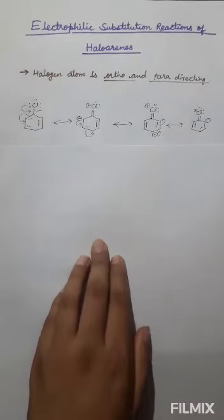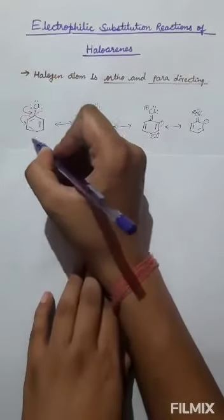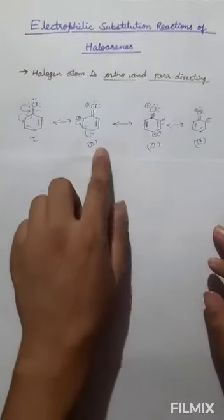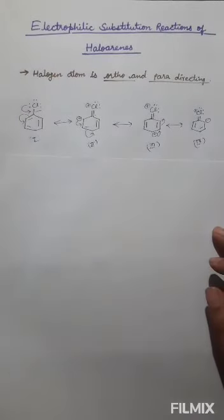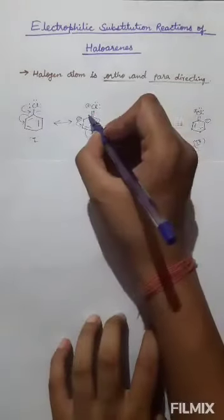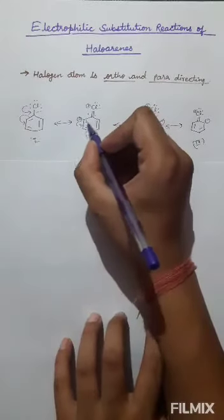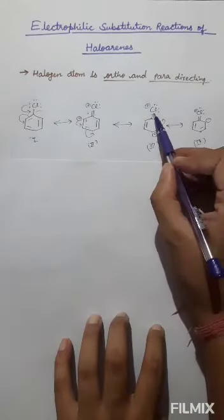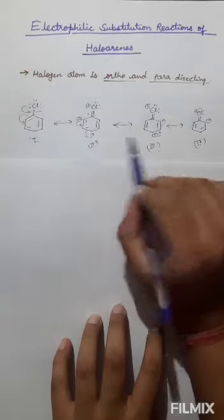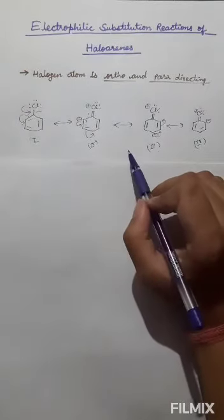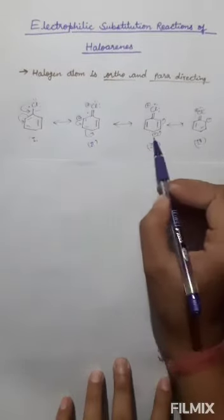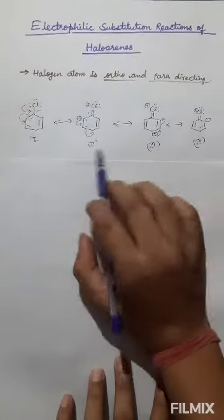So we observe four resonating structures. In the second structure the negative charge is present at the ortho position relative to the halogen atom, and in the fourth structure the negative charge is at the para position. From structures two, three, and four we can see that the negative charge appears outside the ring at ortho and para positions, meaning any electrophilic substance will attack only at the ortho or para positions.